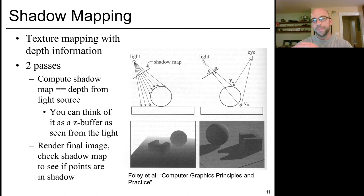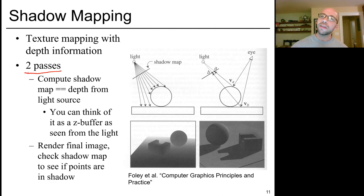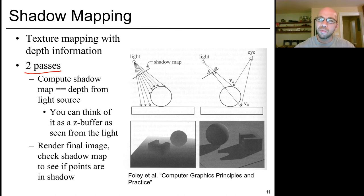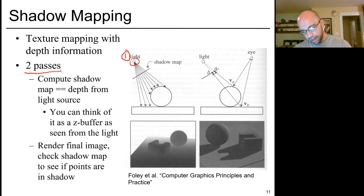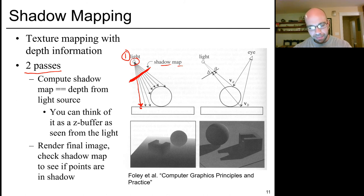Here's the shadow mapping algorithm in more detail — it's kind of like texture mapping but with depth information. It happens in two passes, making this our first example of a multi-pass rendering algorithm. The first pass computes the shadow map, which tells us everything visible from the light source — we'll do that for each light source. The second pass renders the actual image. In the first pass, we render everything from the light's point of view and get the shadow map — for every pixel it tells you the depth before running into something, which is exactly the z-buffer of the scene rendered from the light's position.